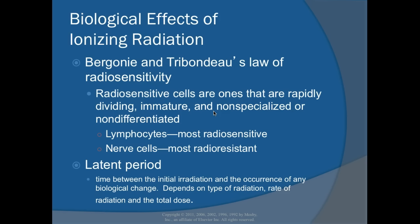Bergonié and Tribondeau's law of radiosensitivity states that radiosensitive cells are rapidly dividing, immature, or non-differentiated. Lymphocytes are the most radiosensitive cells; nerve cells are the most radioresistant. The latent period is the time between initial irradiation and the occurrence of any biological damage, and it depends on the type of radiation, rate of exposure, and total dose received.